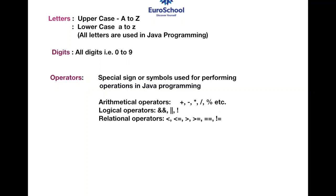Logical operators are AND, OR, and NOT. AND is used when you have both conditions to check — both conditions must be true. OR is represented by two lines; it checks whether any one of the two conditions is true. NOT is used when you want the condition to not be true. All three give the answer in true or false: if both conditions are true, if either condition is true, or if the condition is not true. These are known as logical operators.